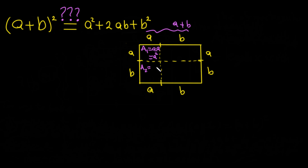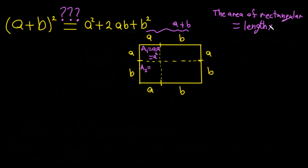The area of this rectangle — I want to call this area two — is 'a' multiplied by 'b'. We know the area of a rectangle is length times length. Here it's 'a' multiplied by 'b'. And I want to call this one area three, which is also 'a' multiplied by 'b'. The last one, area four, equals 'b' multiplied by 'b', which is b squared.